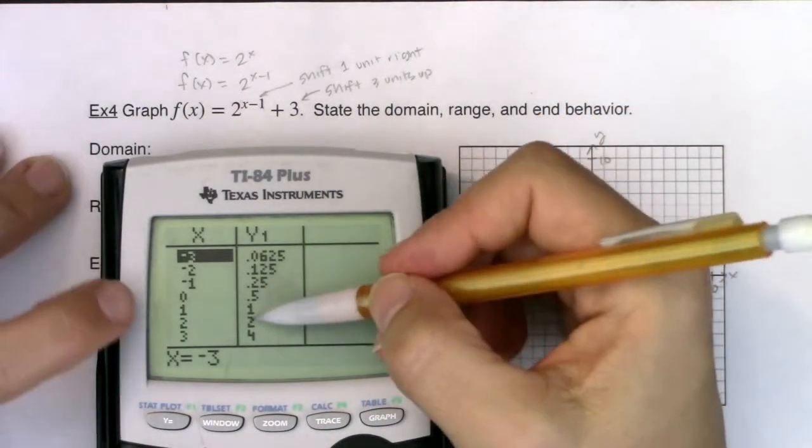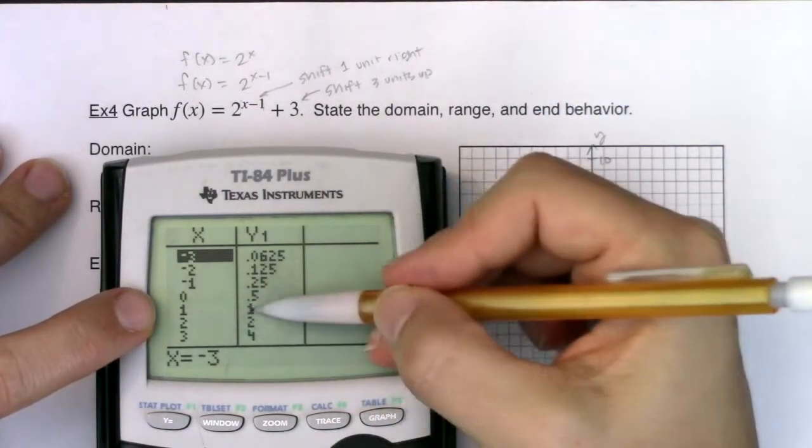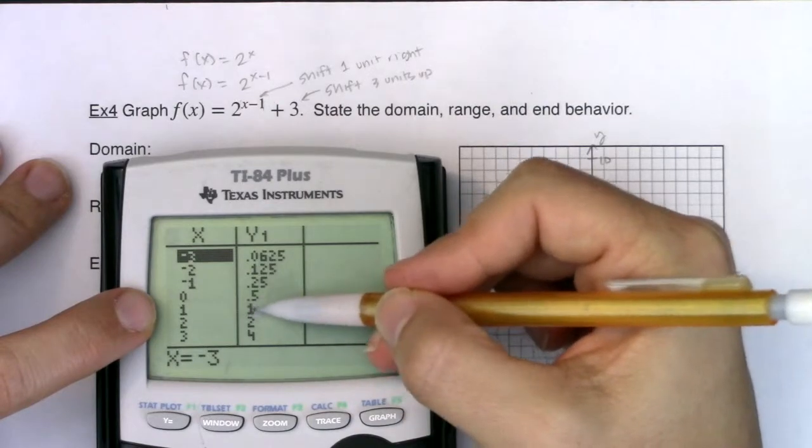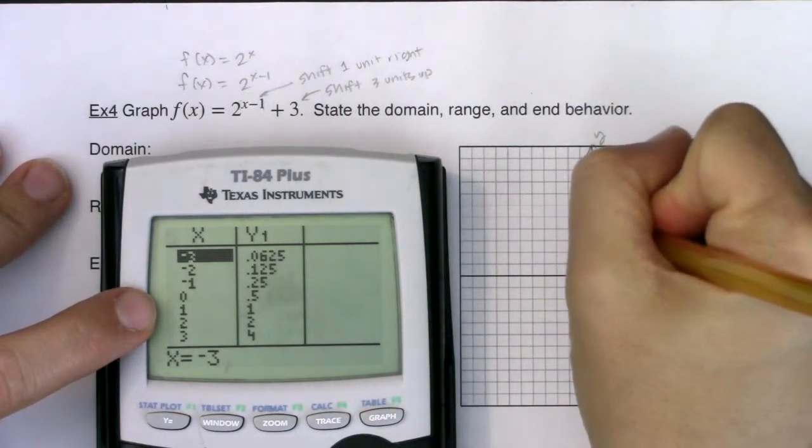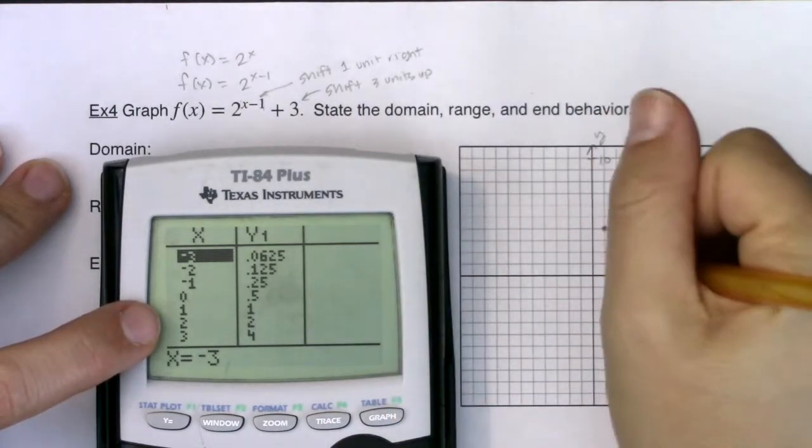So what that means is I can take this ordered pair 1, 1, and I can add 3 to this y value. So I could make this the ordered pair 1, 4. Okay. So I had 2, 2 here.